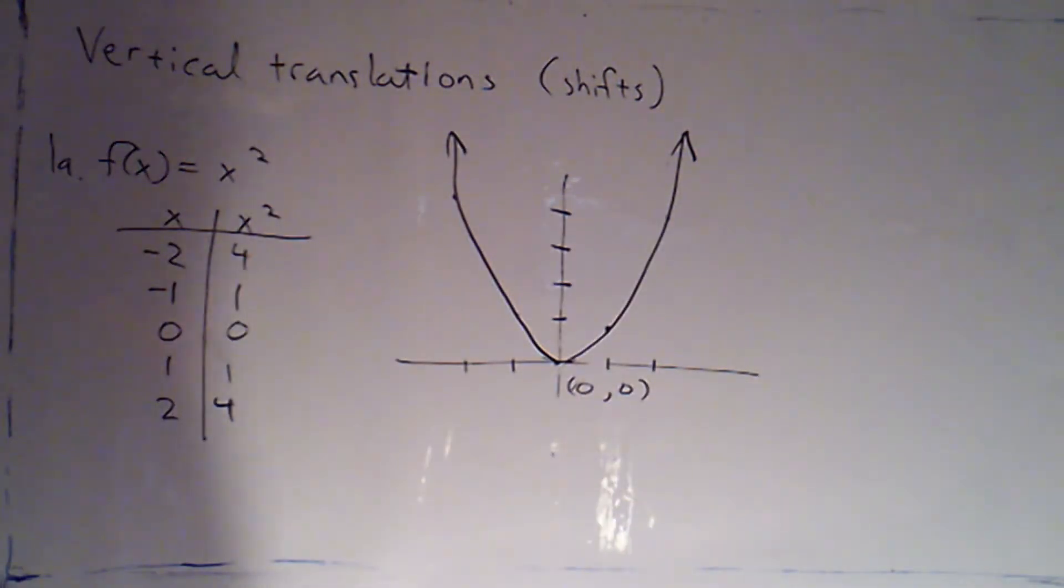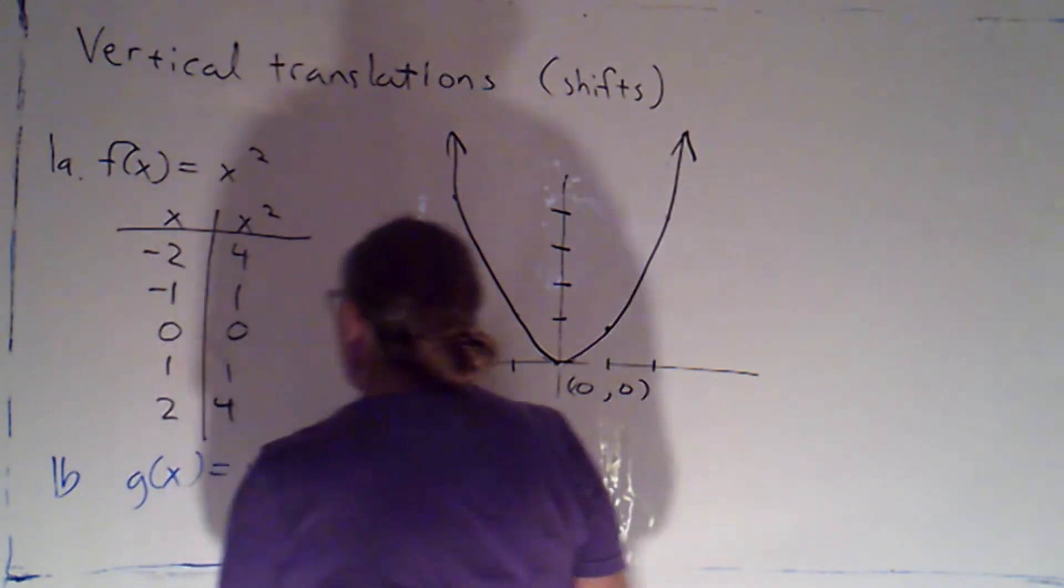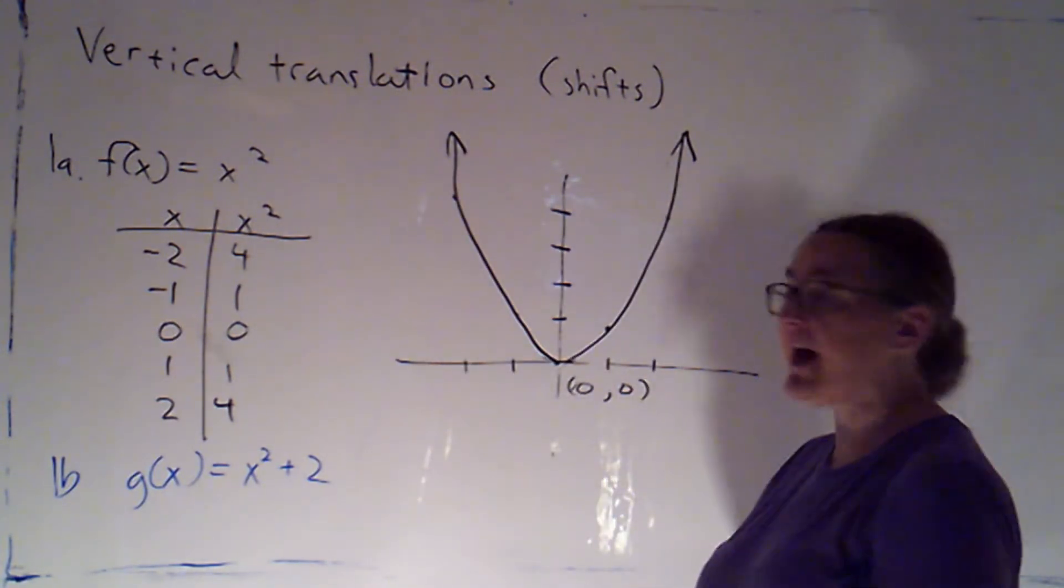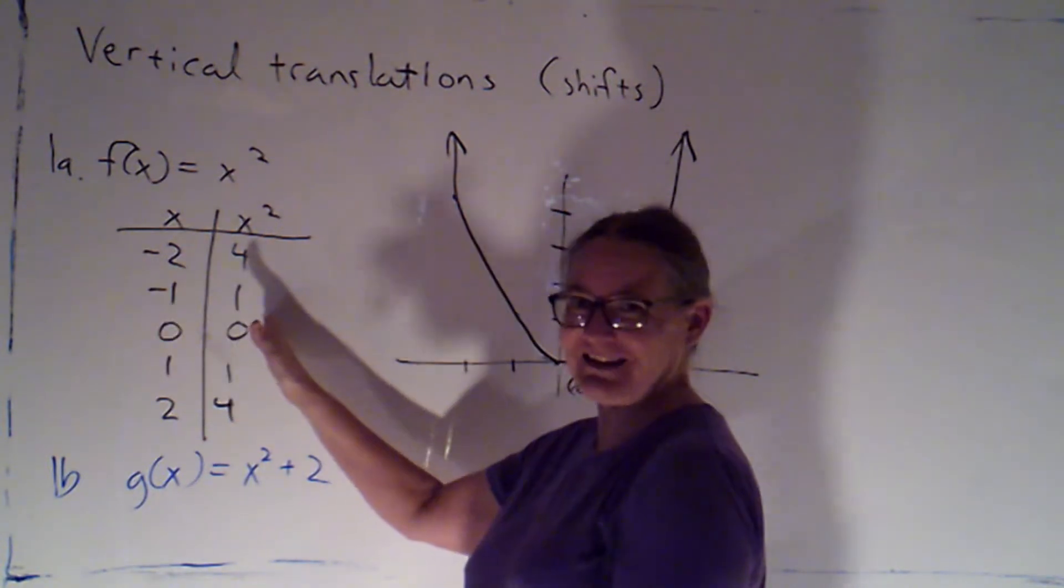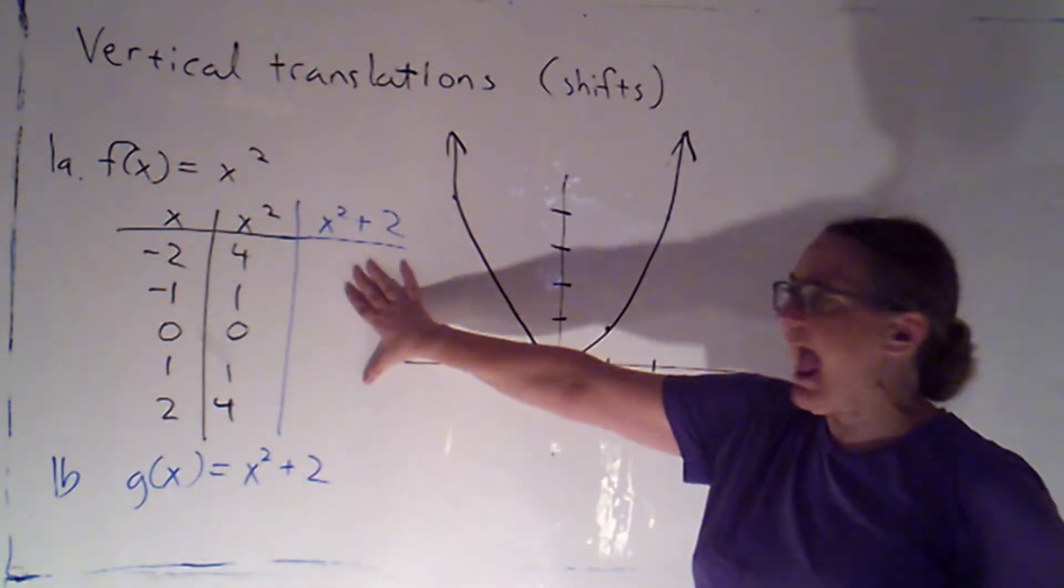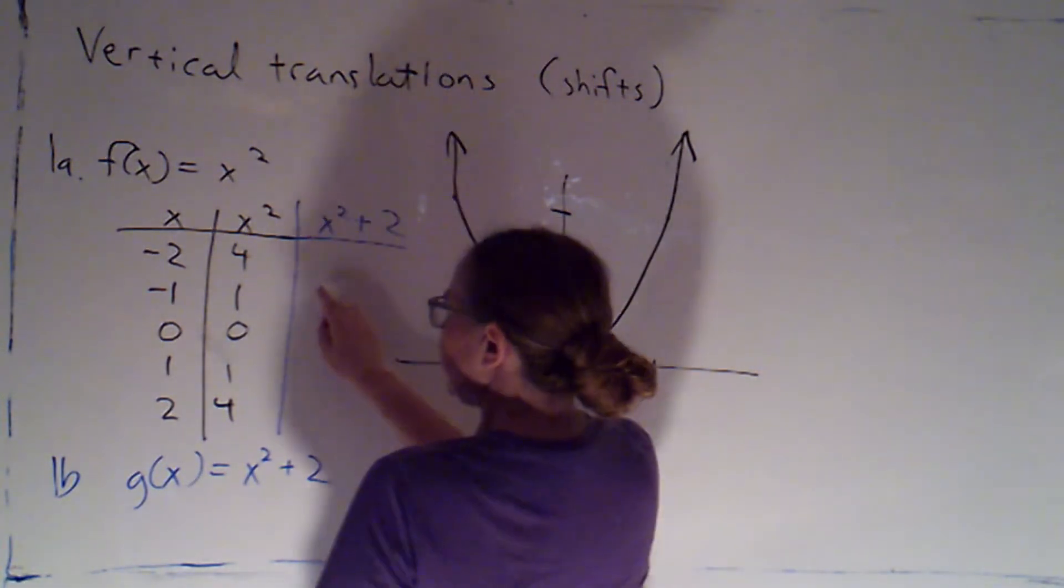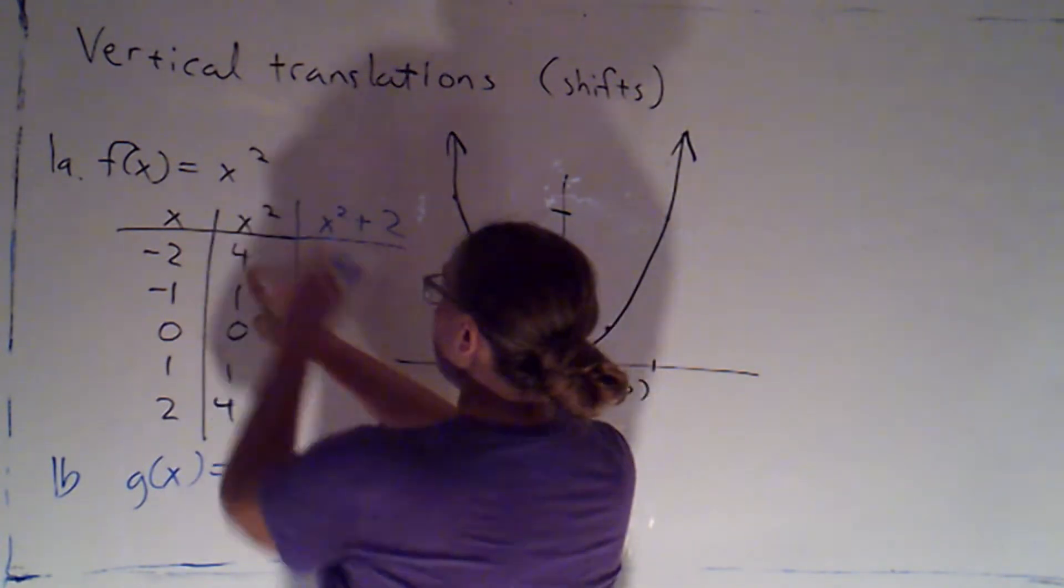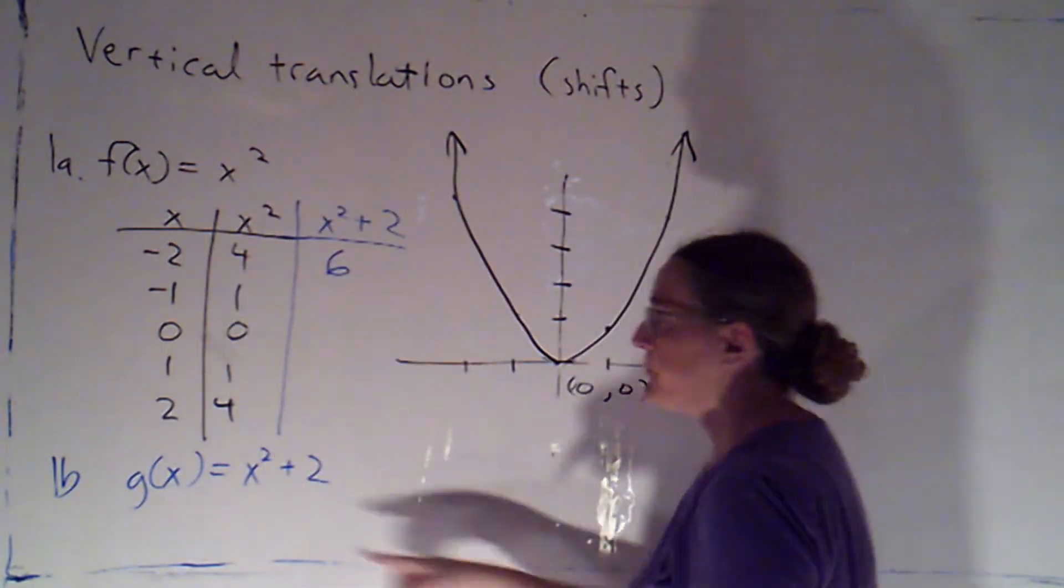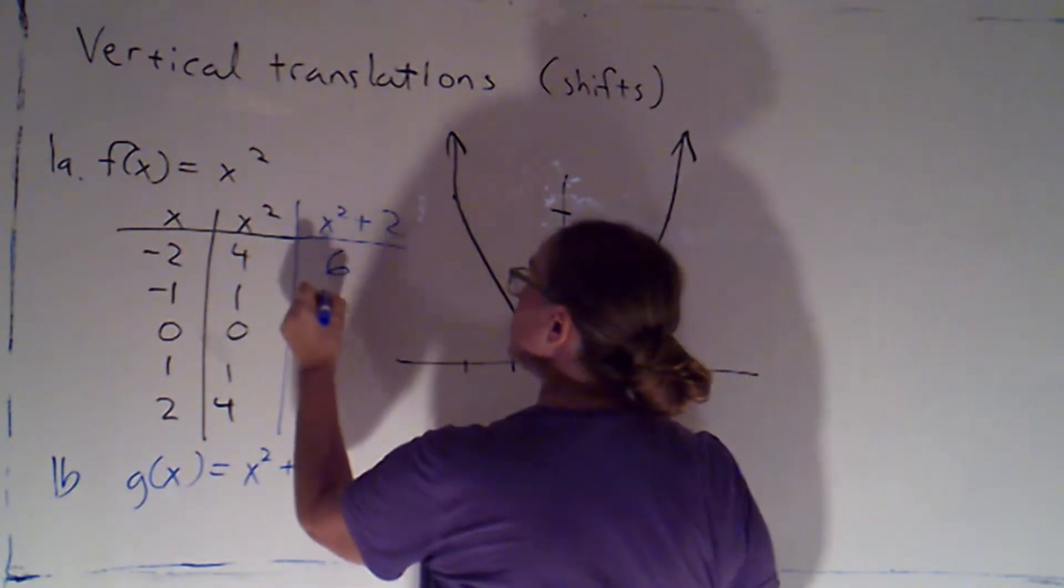For question 1b, we're asked to graph g(x), which is x² + 2. If you've got the worksheet printed out, I create a whole new table of values for g(x). But the first two columns are just x and x², and I add a third column, x² + 2. So I'm just going to add on to the table that I already have here. If I plug in x = -2, I would square x first to get 4, and then I would add 2 to that. So 4 + 2 is 6. If I plug in -1, I would square that to get 1, then add 2. 1 + 2 is 3.